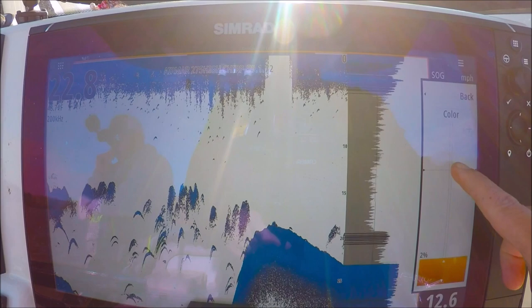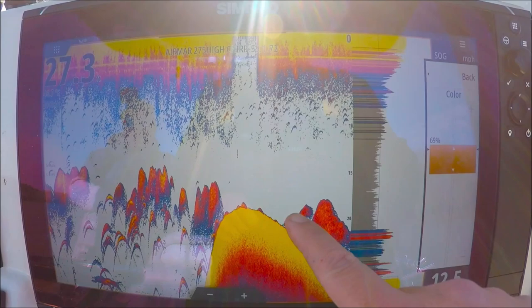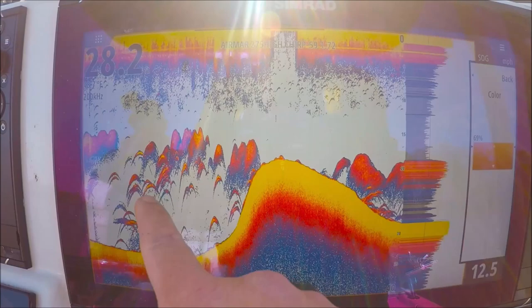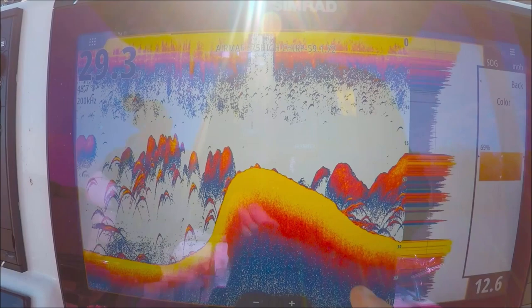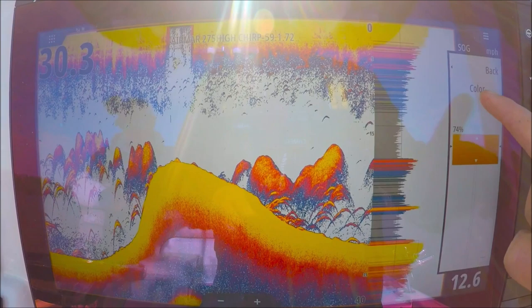I'm going to go ahead and turn my color up. In this palette, yellow is the strongest return. So you can see yellow is the bottom. So these are solid marks here. These are air bladders and fish. These should be yellow, because we know those are good returns. Our solid color is yellow. So I want some yellow in my arches. So I'm going to turn my color up, until I start to see yellow in them.